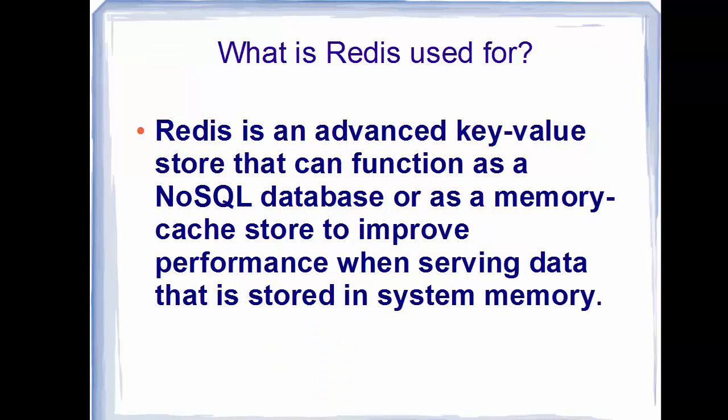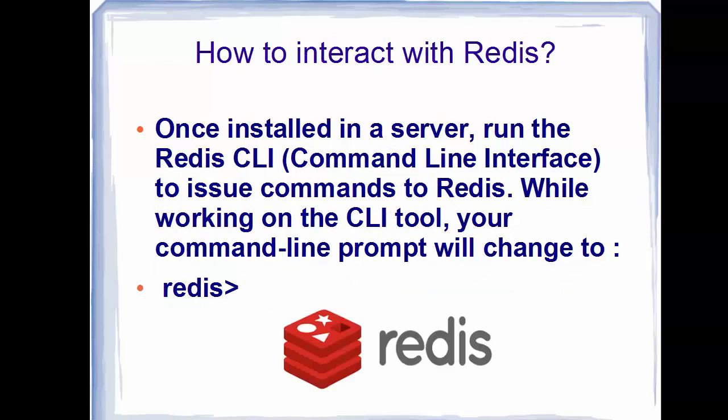Redis is an advanced key-value store that can function as a NoSQL database or as a memory cache store to improve performance when serving data stored in system memory. It can also be used as a message broker, and can be used in place of caching systems such as Memcached.